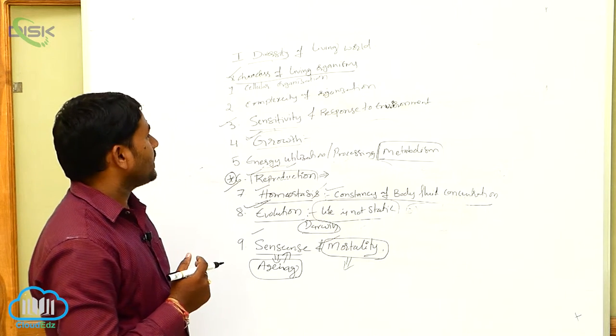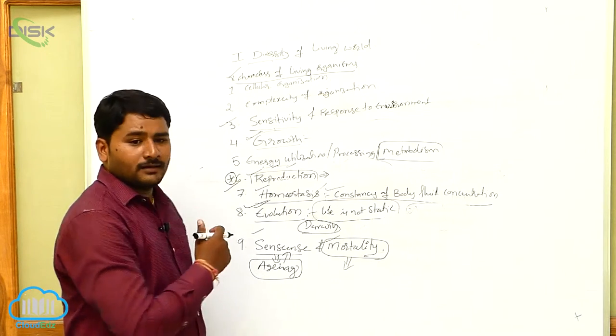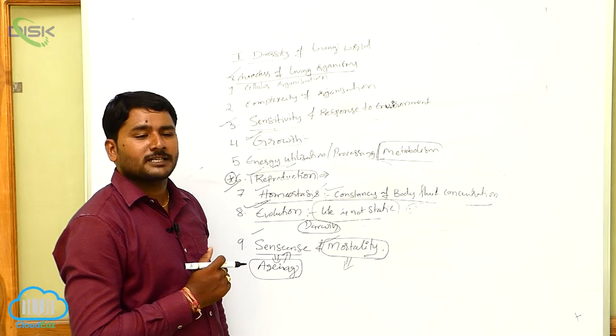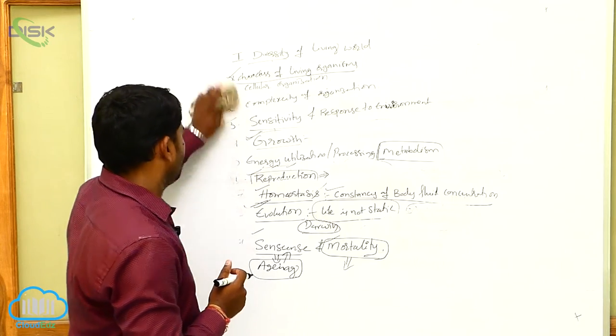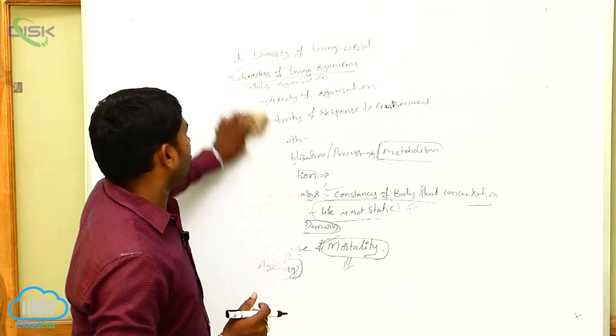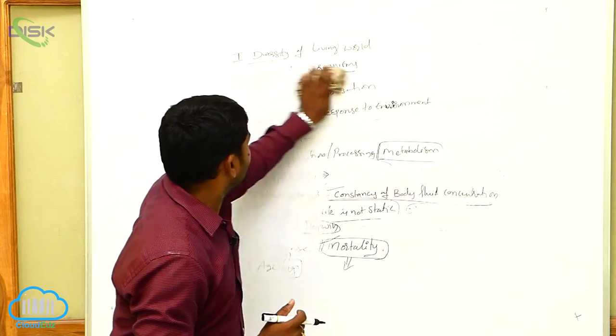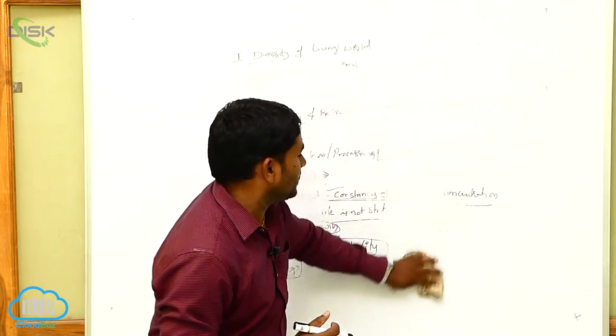So these are the nine characters being expressed by the living organisms. So this is what is life and what are the characters exhibited by the living organisms.